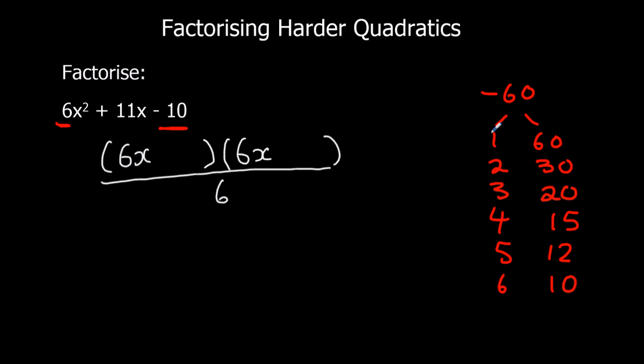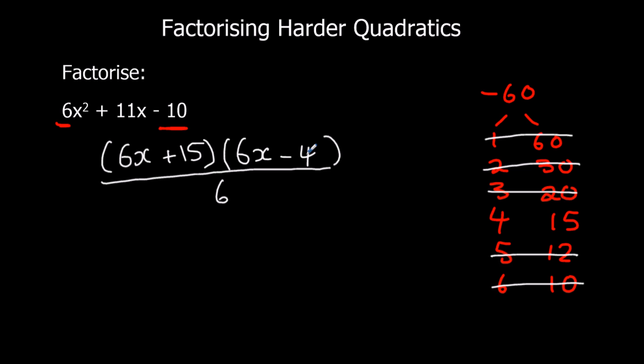Now I need to make 11 out of these. I can't use 1 and 60, 2 and 30, or 3 and 20. I can use 4 and 15. I can't use 5 and 12 or 6 and 10. So I can only make 11 with 4 and 15 — I need positive 15 take away 4. Now I want to simplify by cancelling, but neither bracket is fully in the 6 times table. However, 6 and 15 are both in the 3 times table, and 6 and 4 are both in the 2 times table. So instead of 6, I'm going to think of it as 3 times 2.